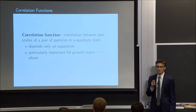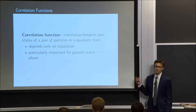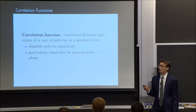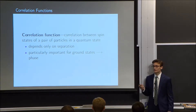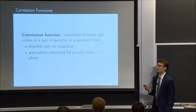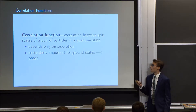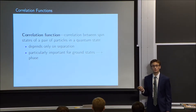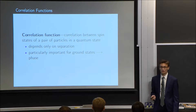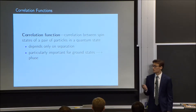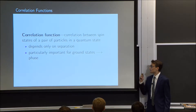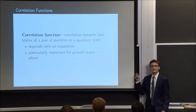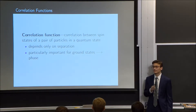The reason why we want to study ground states in this case is to study their correlation functions. A correlation function tells us, for any particular pair of particles, how likely their spin states are to align on any given measurement. A property of the correlation function is that it tends to depend only on the separation between the particles in question, rather than on their specific location within the system. We want to study it particularly for ground states because it helps us classify systems into phases.